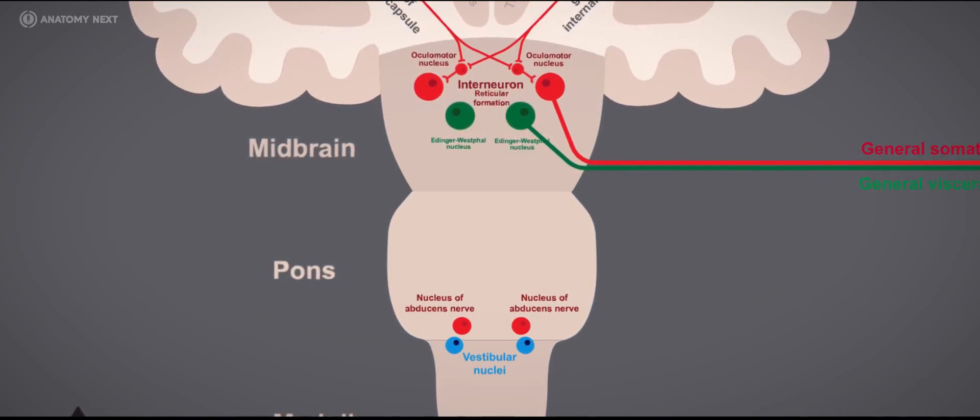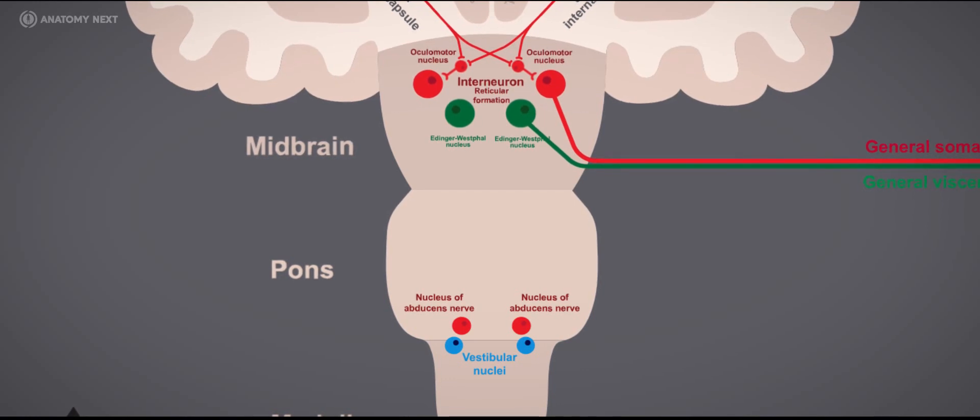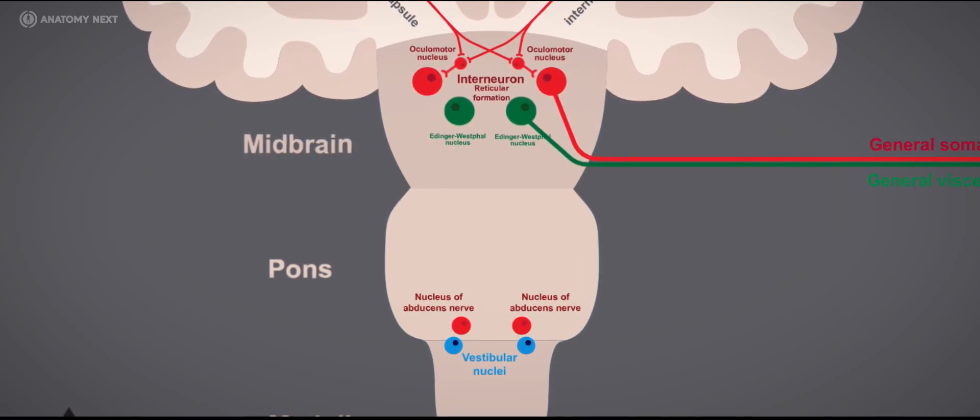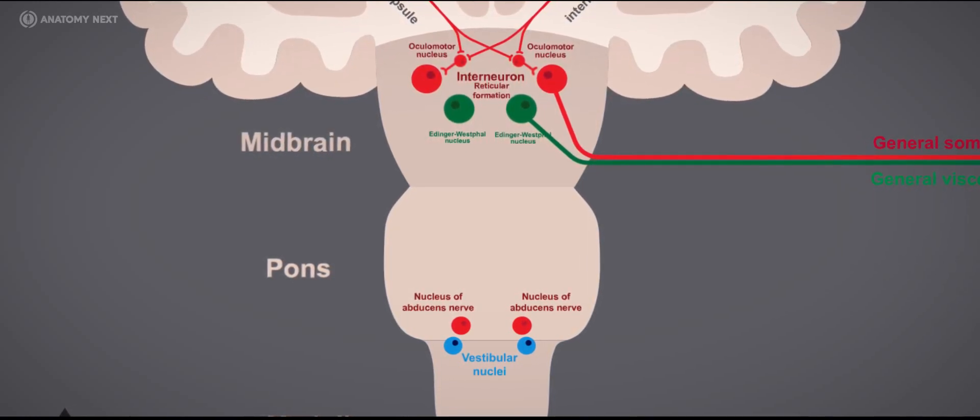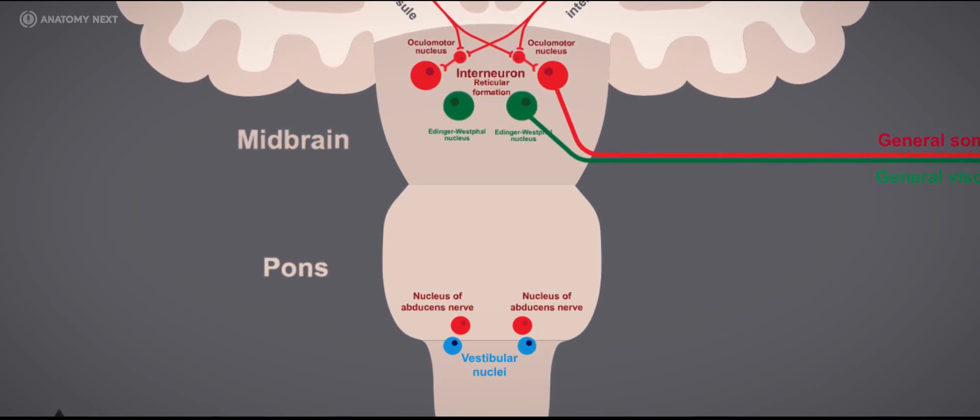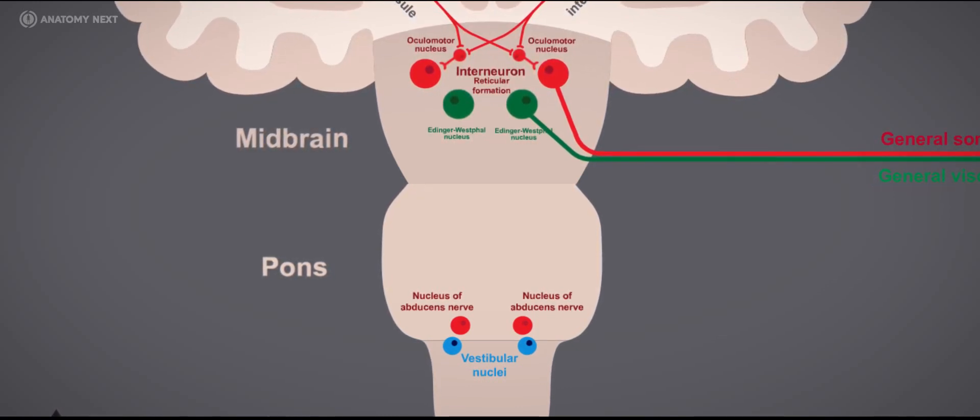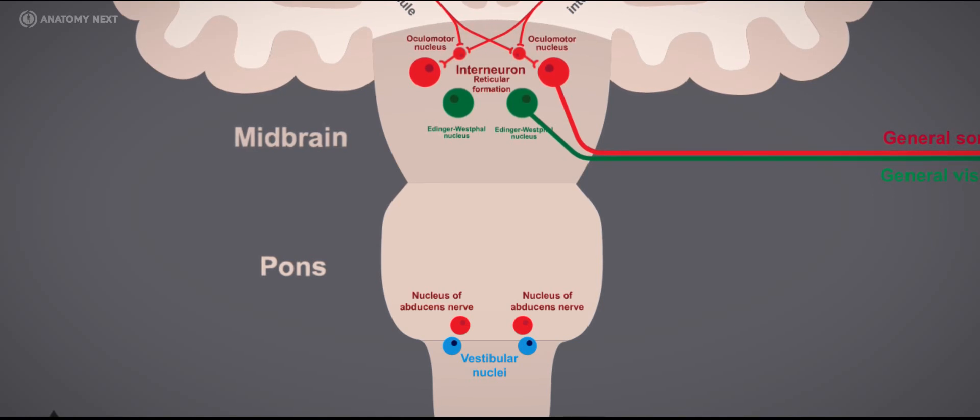For example, the connection between oculomotor and abducens nerve nuclei is mediated by the medial longitudinal fasciculus to provide the medial movement of one eye simultaneously with the lateral movement of the other eye during lateral gaze.